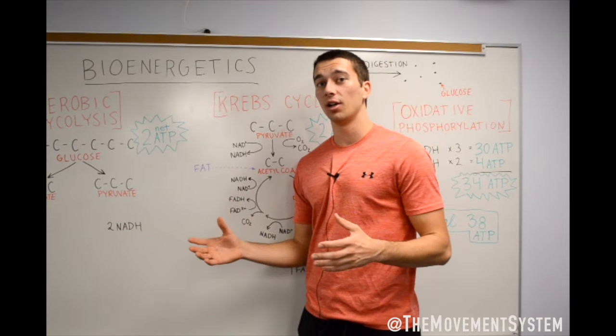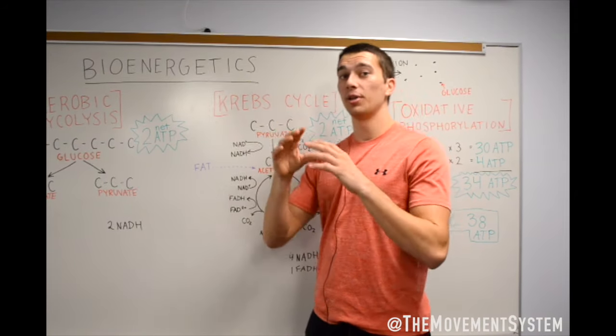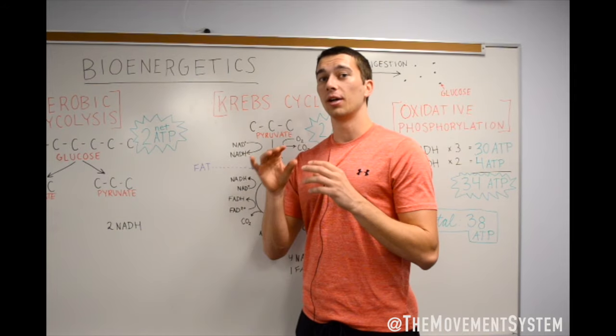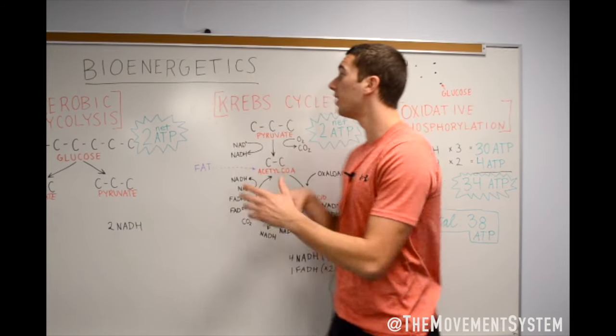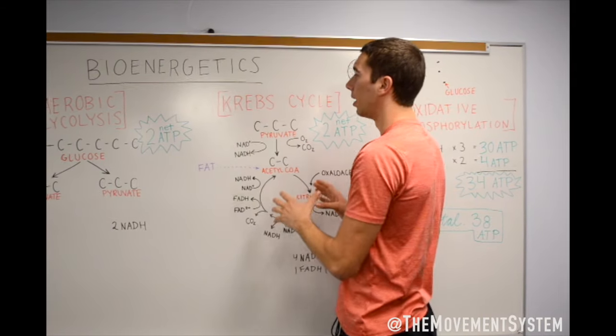So this is within a cell. If you just ate a donut, you broke it down to a glucose molecule. That glucose molecule is split in half into pyruvate, and that pyruvate is what's going to start this Krebs cycle up.